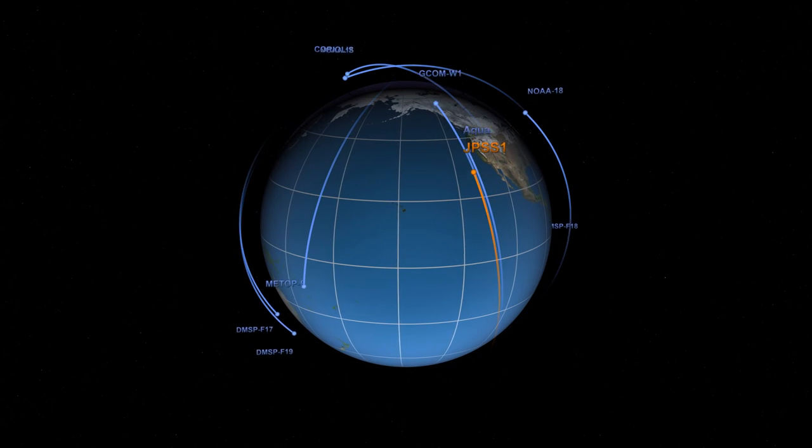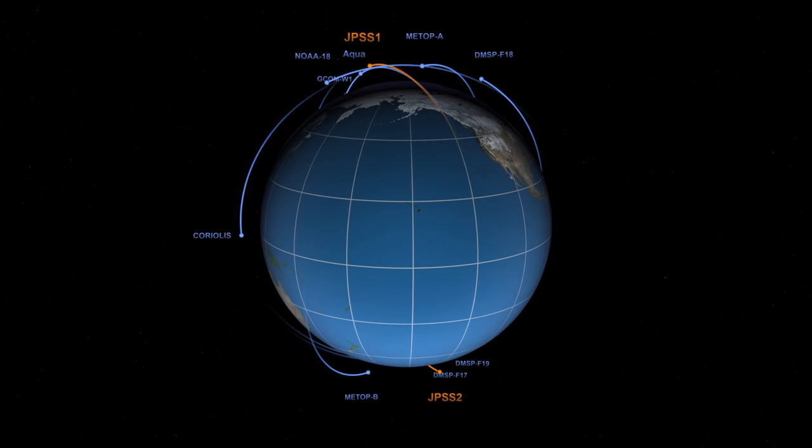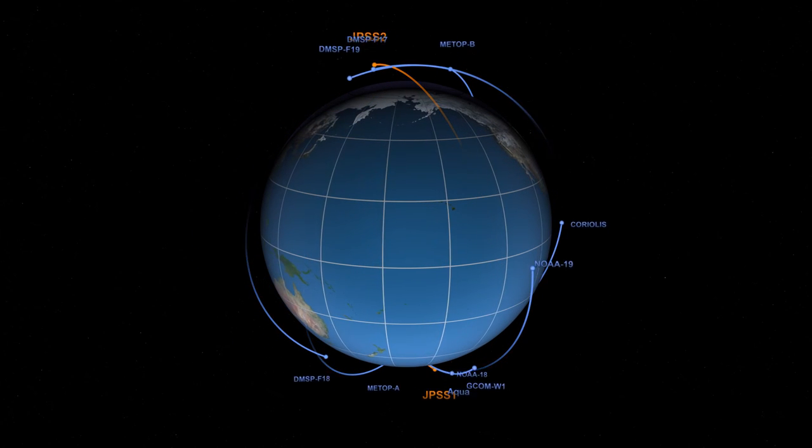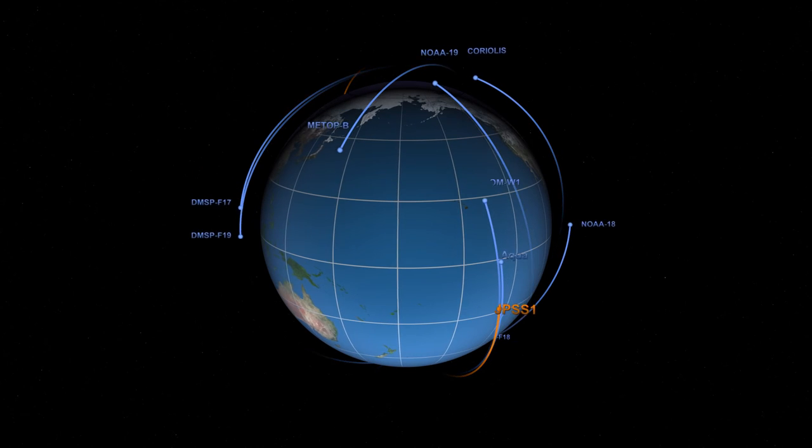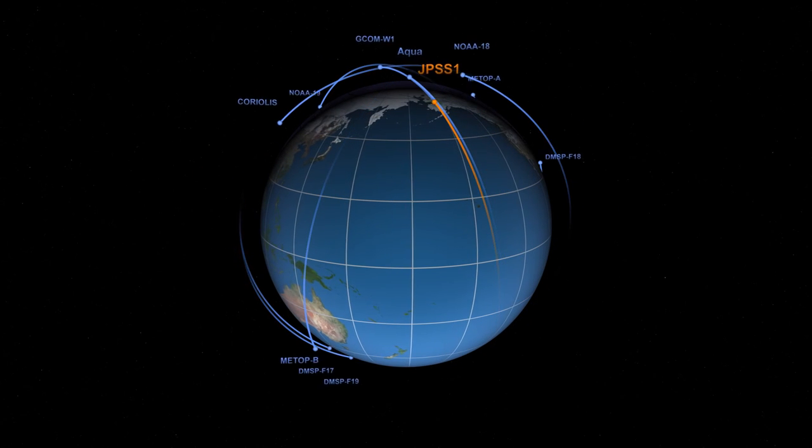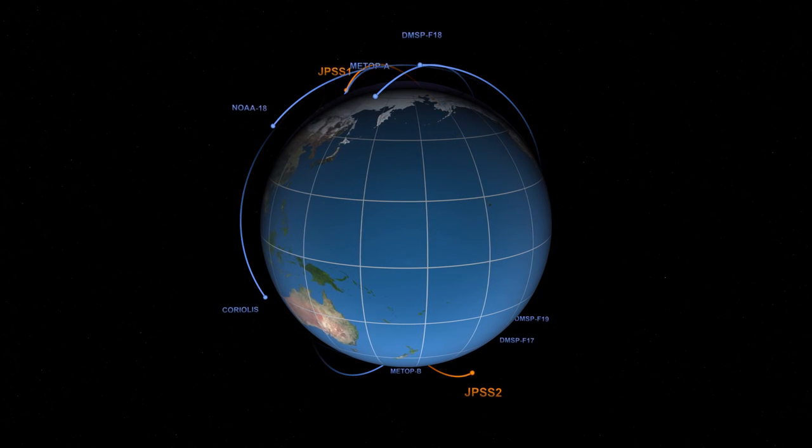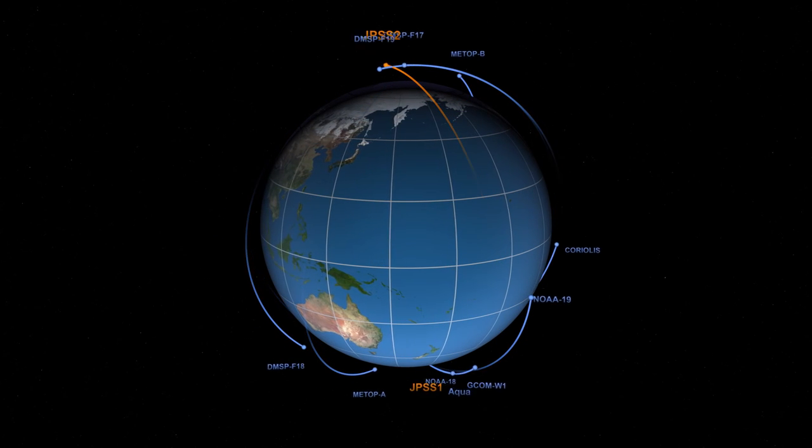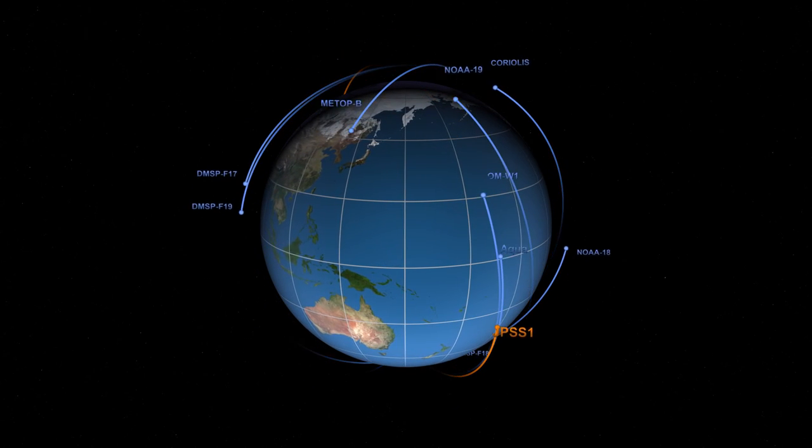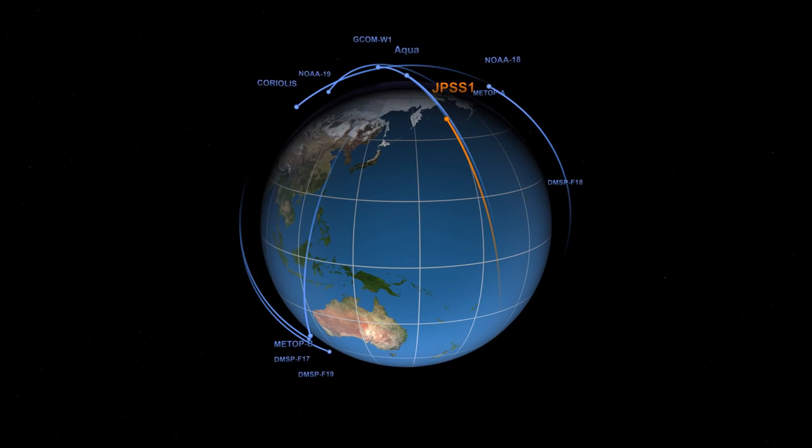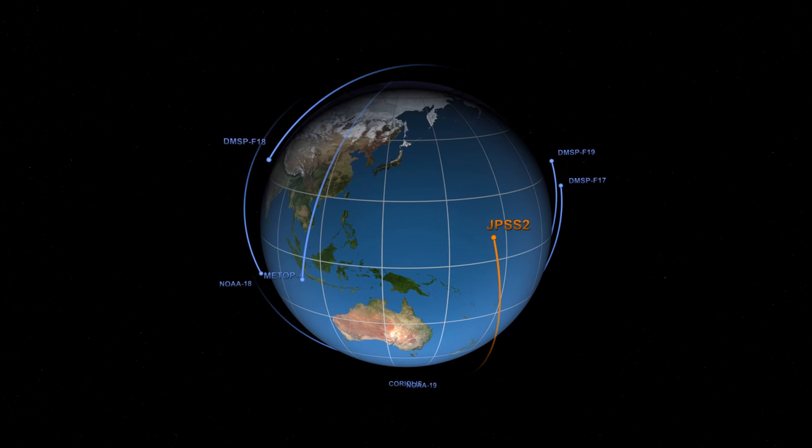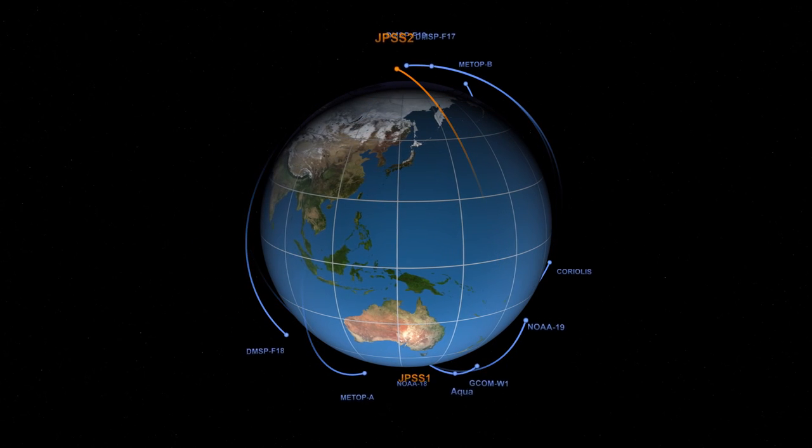JPSS missions will be joining an existing and future constellation of NOAA, NASA, and international satellites, including European, Japanese, and U.S. military satellites. These many missions vary in the orbits they fly, time-of-day observations they make, and Earth-observing goals they will achieve. With this even larger fleet of satellites contributing to data collection, global space-based observational coverage of the Earth will happen even faster.